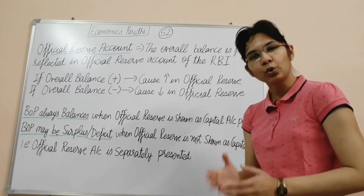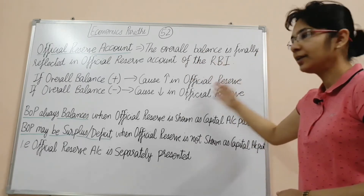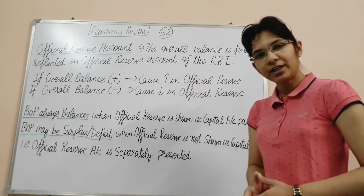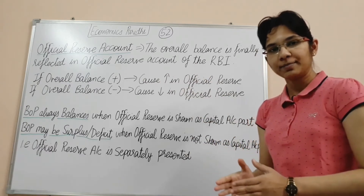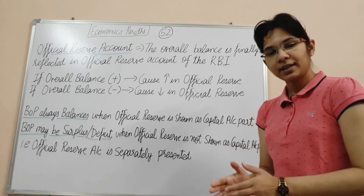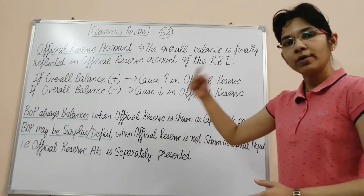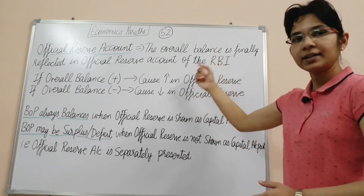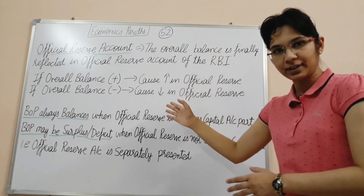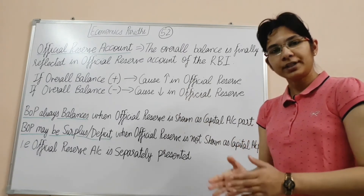Right, now let's see what the official reserve account is. The overall balance is finally reflected in the official reserve account of RBI. As we saw in the previous video, overall balance is: capital account plus current account plus errors and omissions. So the overall balance is finally reflected in the official reserve account of RBI.